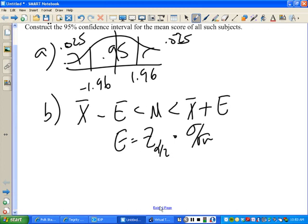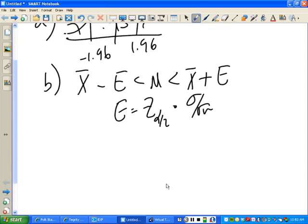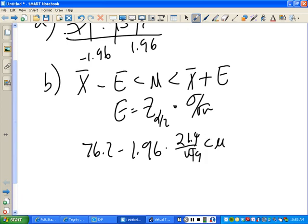All right, part C. 76.2 minus 1.96 times 21.4 over the square root of 49. Bless you. It's less than Mu, which is less than 76.2 plus 1.96 times 21.4 over the square root of 49.